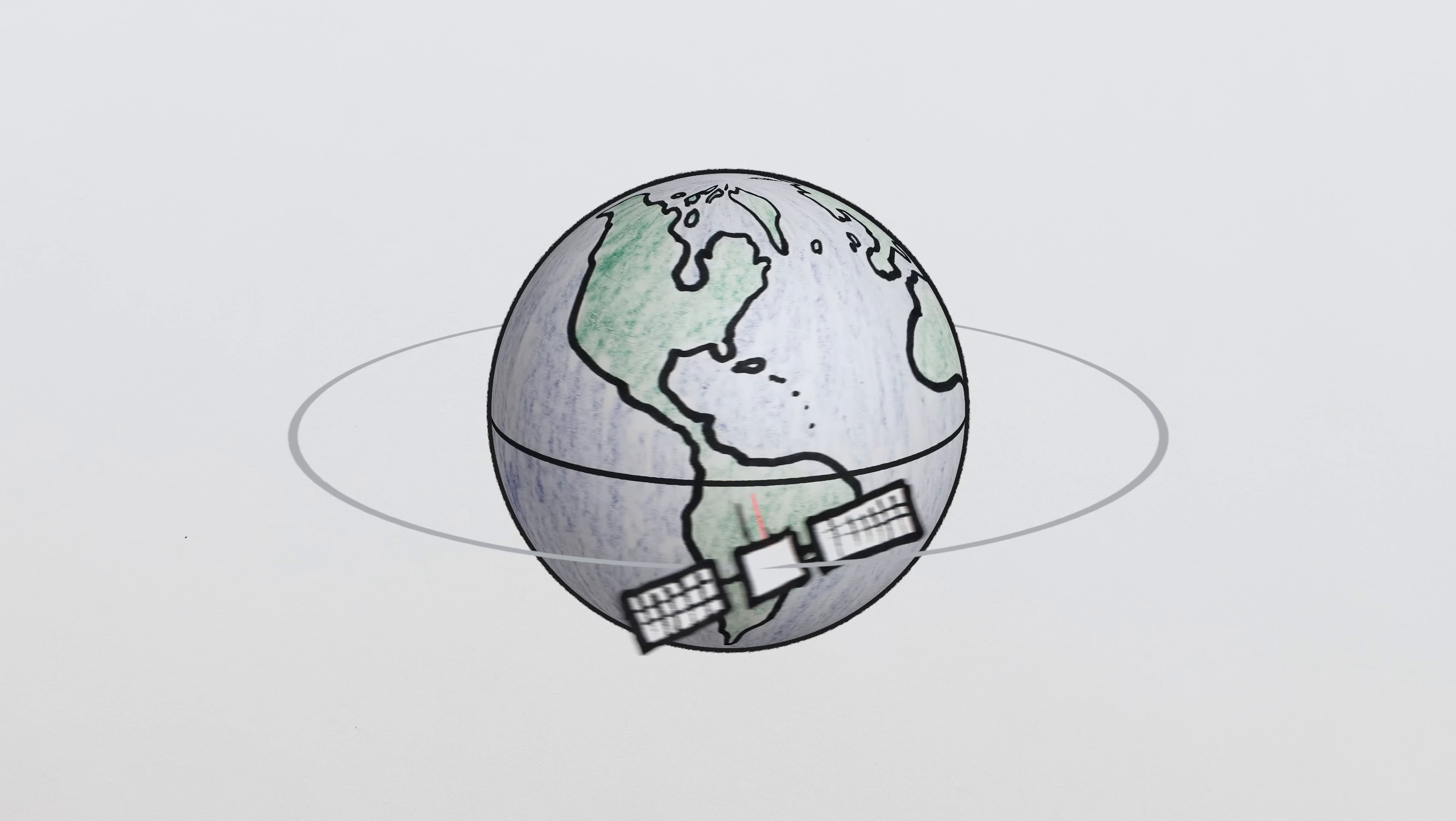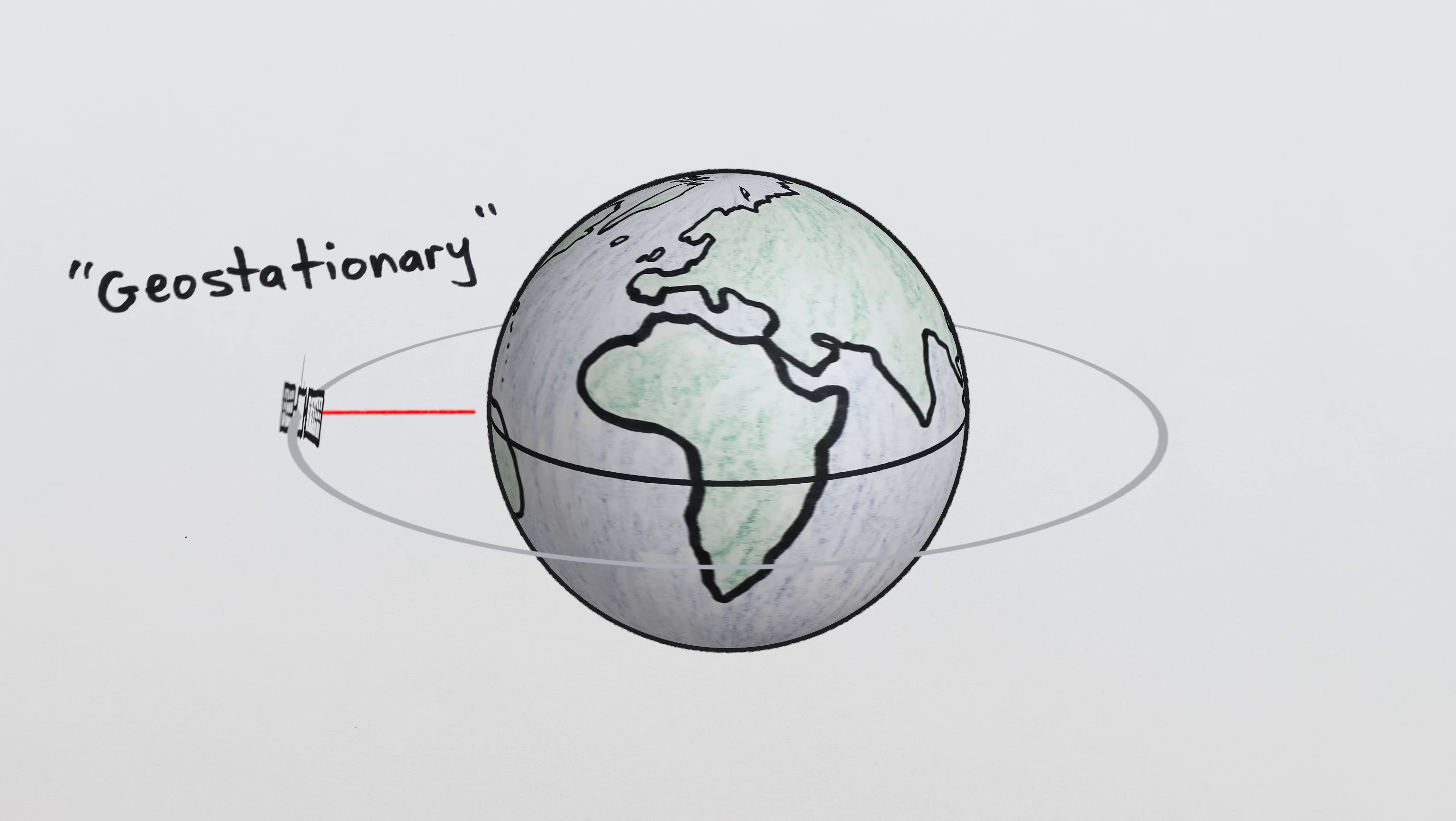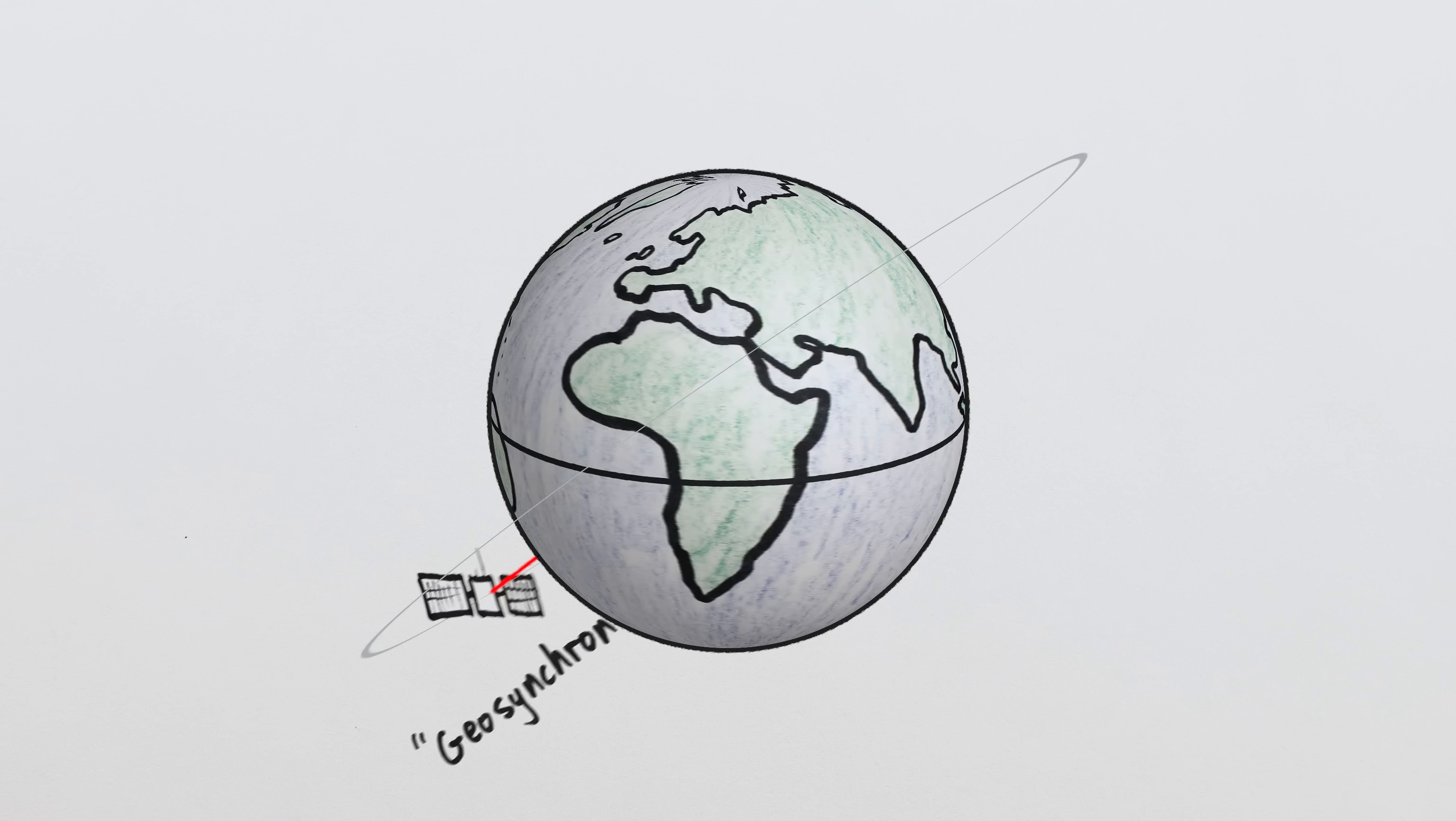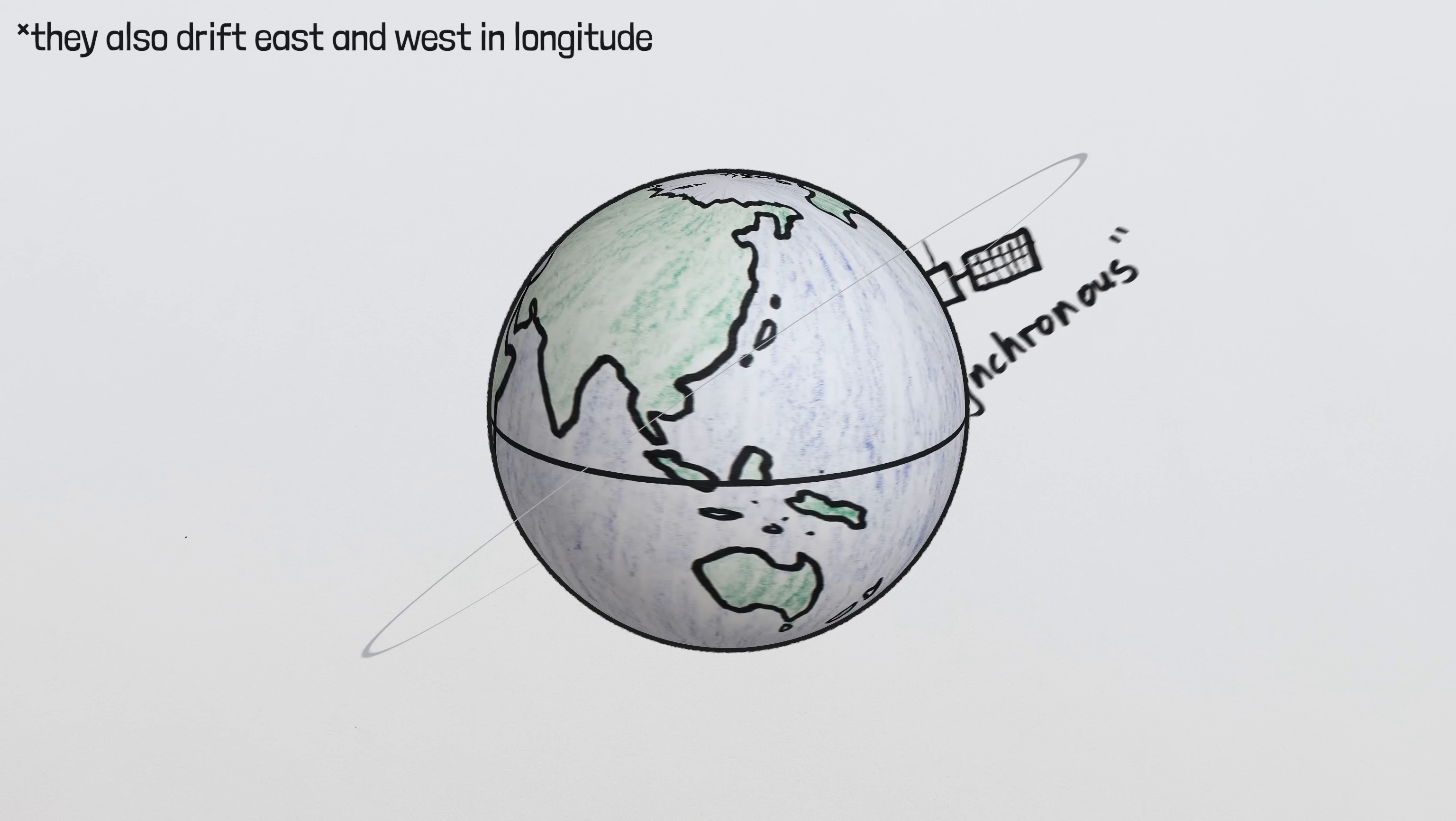Technically only geosynchronous orbits above the equator are actually stationary and are called geostationary orbits. Geosynchronous orbits in general take the same time as the Earth to rotate, but can be at other angles and so appear to drift up and down in latitude while floating overhead.